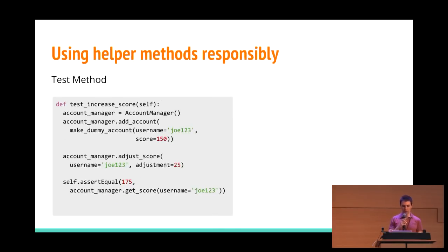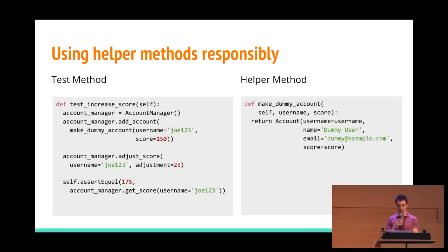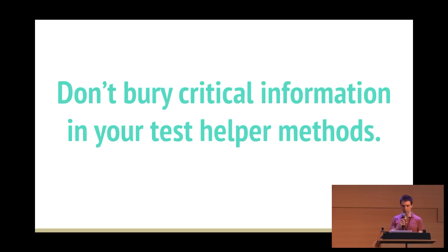You can still use the helper method if you just respect this law of not burying critical values. The rewritten version still eliminates some boilerplate in a make_dummy_account method, but all the information the reader needs is right there. We see Joe123 is created with a score of 150, and 150 plus 25 is 175 — that all makes sense. The helper method is just eliminating dummy work for parameters that are required but not relevant to your test. Don't bury critical information in your test helper methods — keep all the information the reader needs in the test itself.